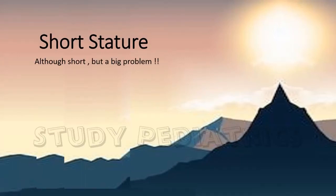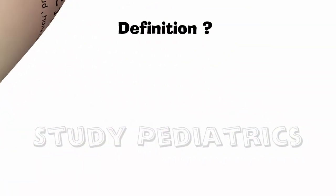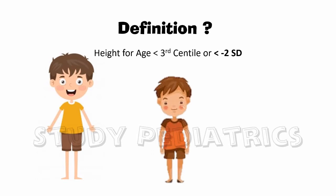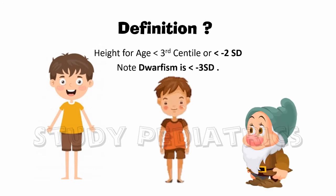Short stature — although short, but a big problem. Let's begin the topic by definitions. Short stature is nothing but being less tall than age demands. According to standard guidelines, if a child has a height for age less than the 3rd centile or less than 2 SD, then he is considered as short stature. Note: the term dwarfism is different from short stature. Dwarfism can be considered as an extreme form of short stature, where the value dips below 3 SD from the mean height for age.